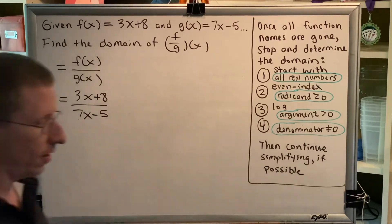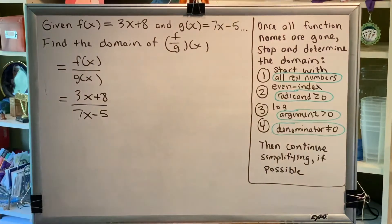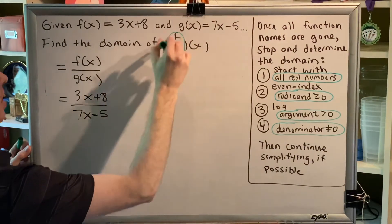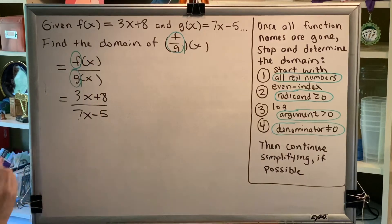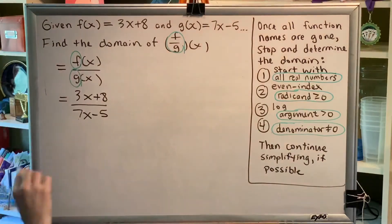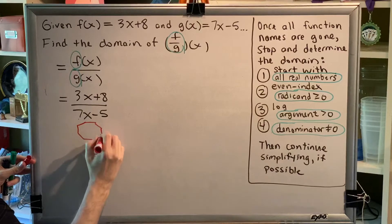Now what I want you to notice is as you're solving this problem pay attention to when the function names first disappear. So in the problem statement there was an f and a g. Here we have an f, here we have a g, but at this part of the problem this is the first moment where we no longer have our function names f and g.